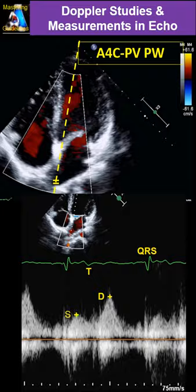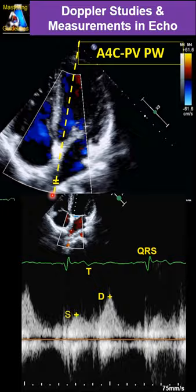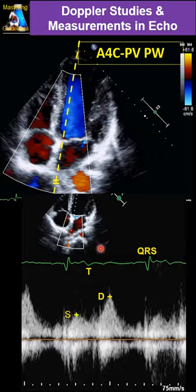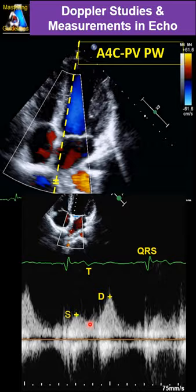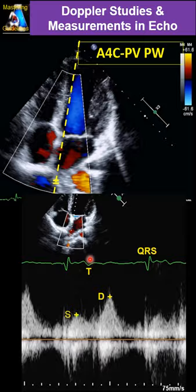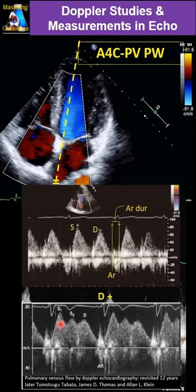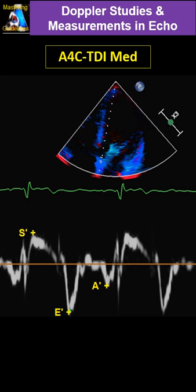Then we go to the pulmonary vein. Fan up and down and decrease the color scale to around 40 to find the right pulmonary vein. Place the sample volume inside the pulmonary vein and obtain Doppler. S and D are very important. S is systolic — after the QRS up to the T wave. D is after the T wave. Sometimes you have three waves: S1, S2, and D — measure S2, which corresponds with the T wave.